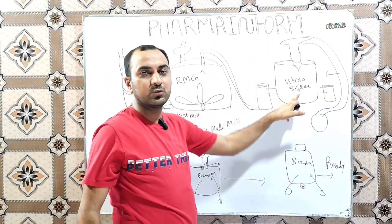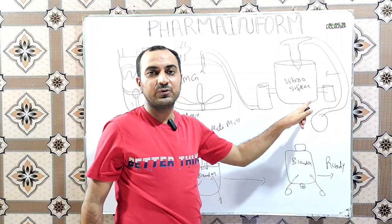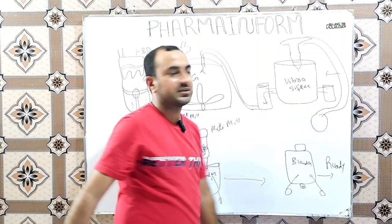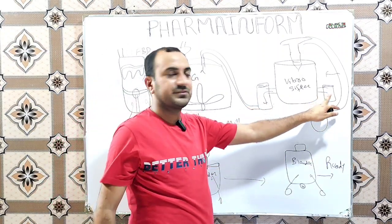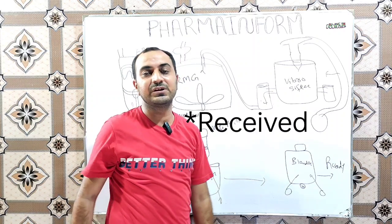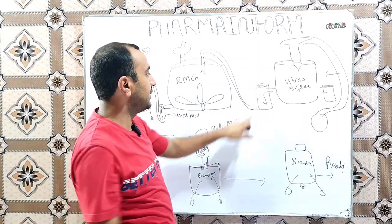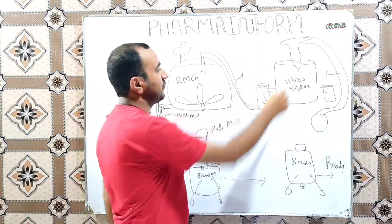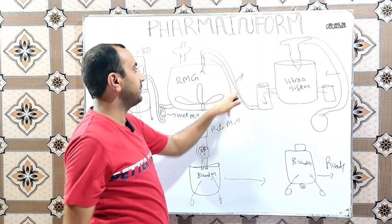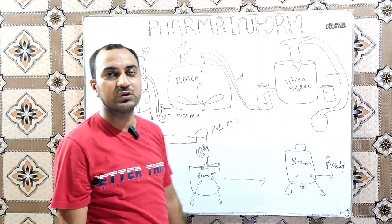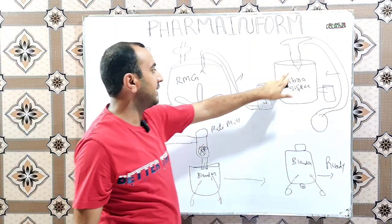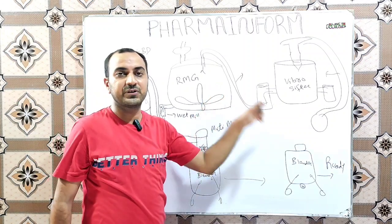From the hopper, our material is shifted to the sieving chamber of the vibro sifter, and after sieving, the material is collected into the collection container. There is a second port on the vibro sifter for overflow. After sieving, the material in the container is then transferred using the same pneumatic transfer system through a pipe into the rapid mixing granulator.